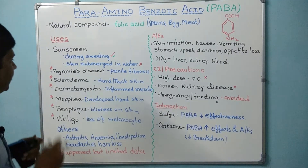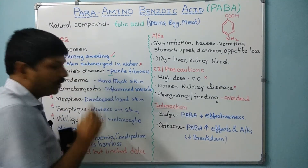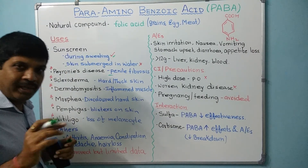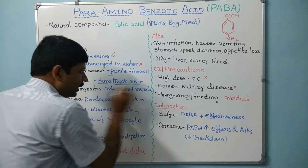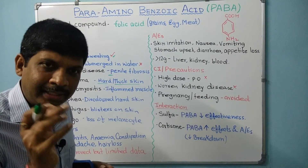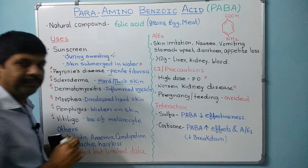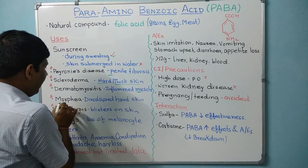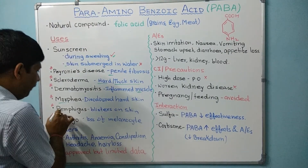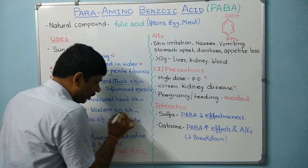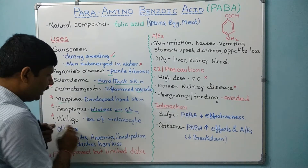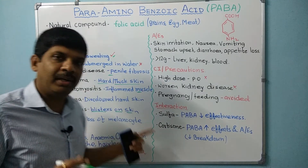The next FDA-listed condition is Peyronie's disease, which is penile fibrosis. Then we have scleroderma, where there is hard or thickened skin. Next is dermatomyositis, where inflamed muscles are present. Then morphea, where you can see discolored hard skin. And pemphigus, where there are blisters or pus-filled blisters on the skin. Then we have vitiligo, where there is loss of melanocytes.